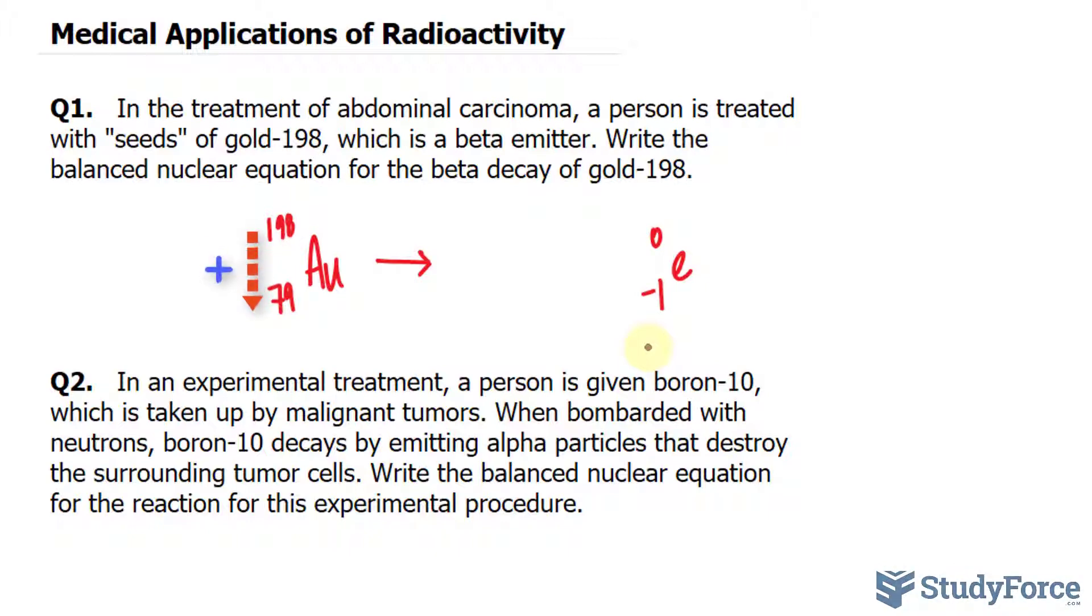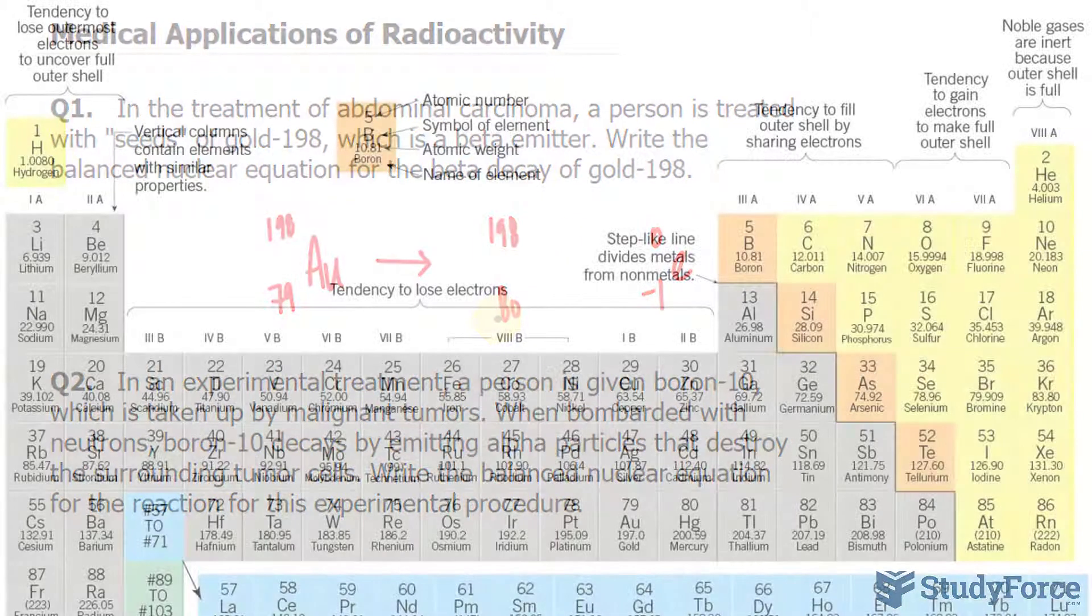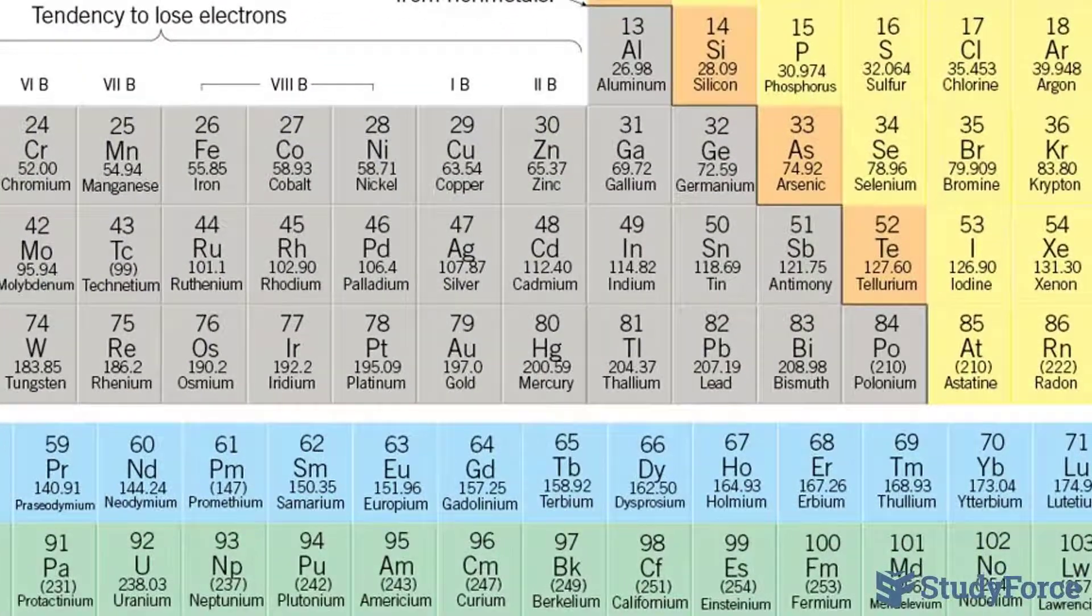so expect the atomic number to increase. This suggests that the unknown symbol will have 80 protons and it will have 198 as its mass. You could have also solved this mathematically. What number minus 1 gives you 79? It's 80. So the 80th element on the periodic table happens to be mercury, so I'll write down Hg plus this beta particle.